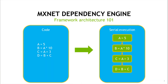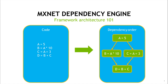First we need to understand how MXNet is currently scheduling its operations. Let us consider a simple code shown on the left side of the slide. We first assign value to variable A, then use that variable to compute B and C, and finally we use both of them to compute D. The easiest way of executing such code is doing it serially, one operation at a time. However, this does not really take advantage of all the information that we get from this code. The missing component is the knowledge that B and C are actually computed independently, only reading but not modifying input A. To get advantage of this, we can construct the graph of dependencies and execute the code by traversing this graph, exploiting as much parallelism of the execution as possible.